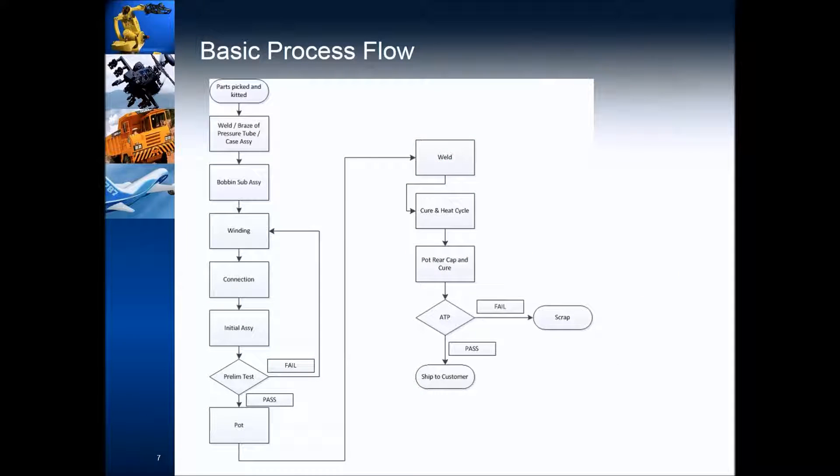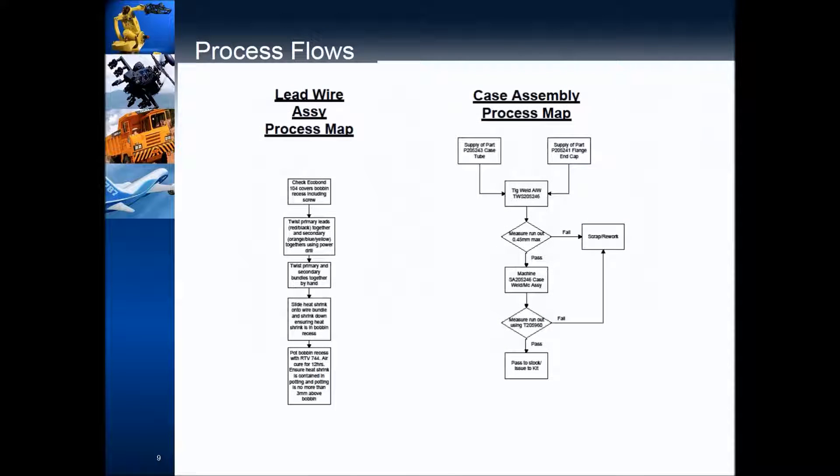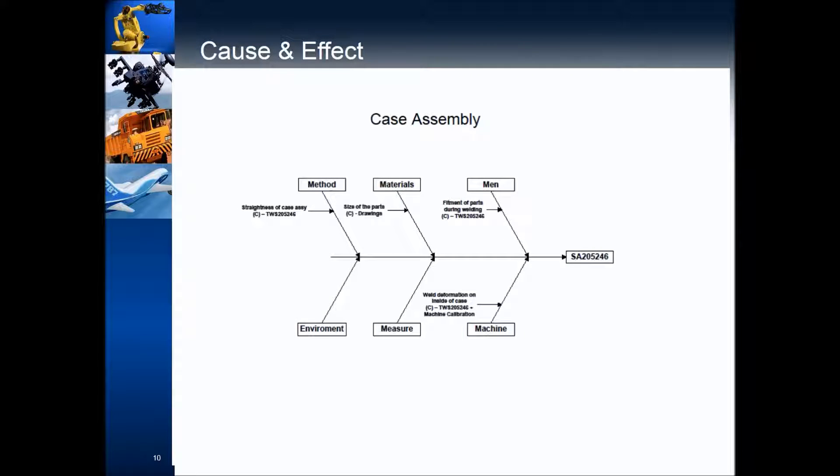So we're going to look at the process flow for the process. We've also got to look at the variables for the product. So this isn't just about the way we're assembling it, although that could be an issue. It could be tolerances. Something's wrong with the tolerance. So this is about the parts, as well as the process. There's the process flow. There's a more detailed process flow. So we've got winding. We've got assembly. We've got making electrical connections. And we've got the test at the end.